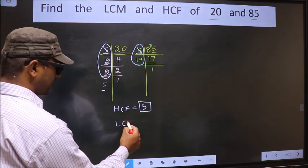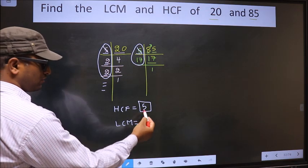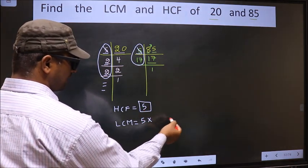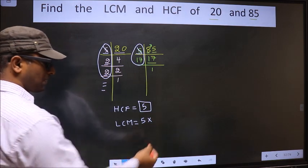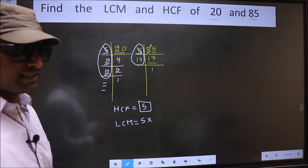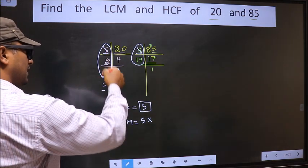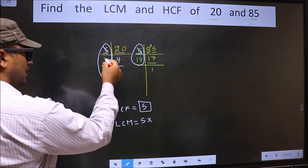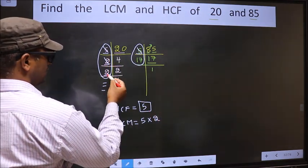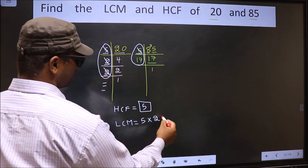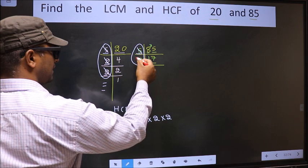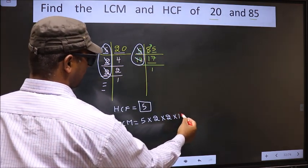Now to get LCM. Whatever number we got as HCF, to that we should multiply by certain numbers which we did not cut. What I mean is, see, over here, 2 is not cut, so now you cut 2 right here. Now this 2 is not cut, so you cut 2 right here. Over here, 17 is not cut, so now you cut 17 right here.